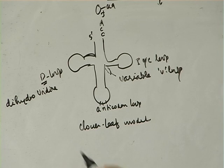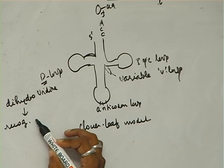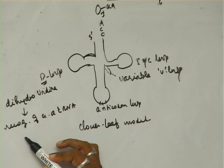What is the function of the D loop? It is involved in the recognition by aminoacyl-tRNA synthetase enzyme.